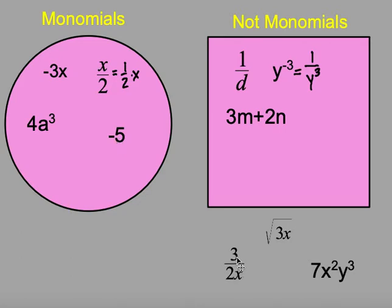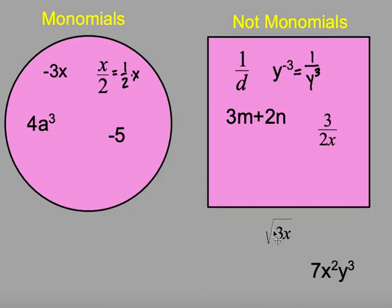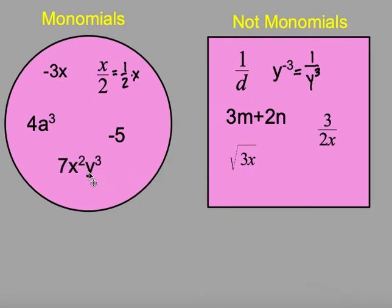This next one, 3 divided by 2x — remember I can't do division of a variable, so that is not a monomial. I have the square root of 3x; as soon as I apply a square root, it is not a monomial. And my last one, 7x squared y cubed — it is a product of numbers and variables, so this lands in the monomial category.